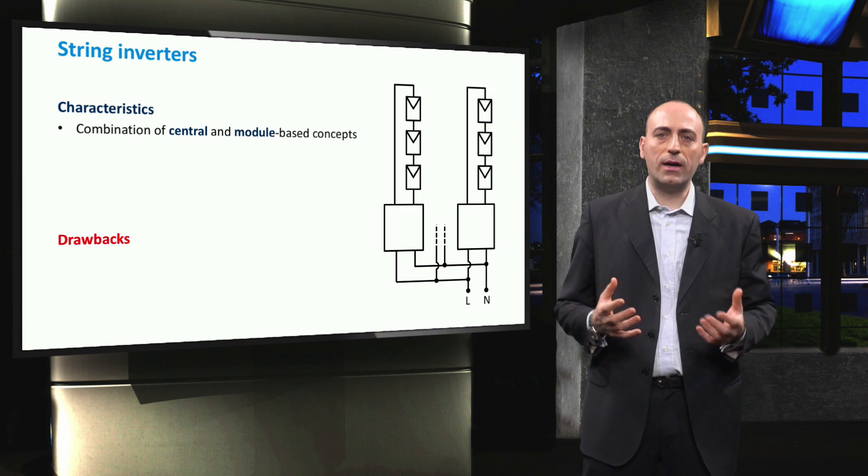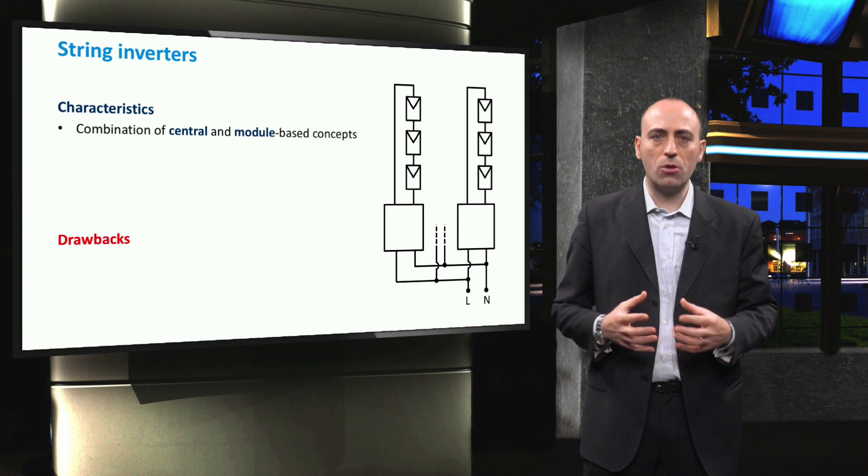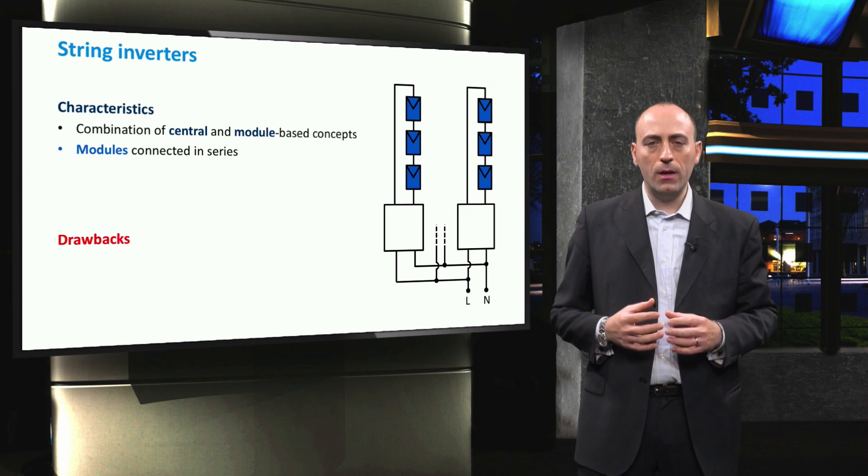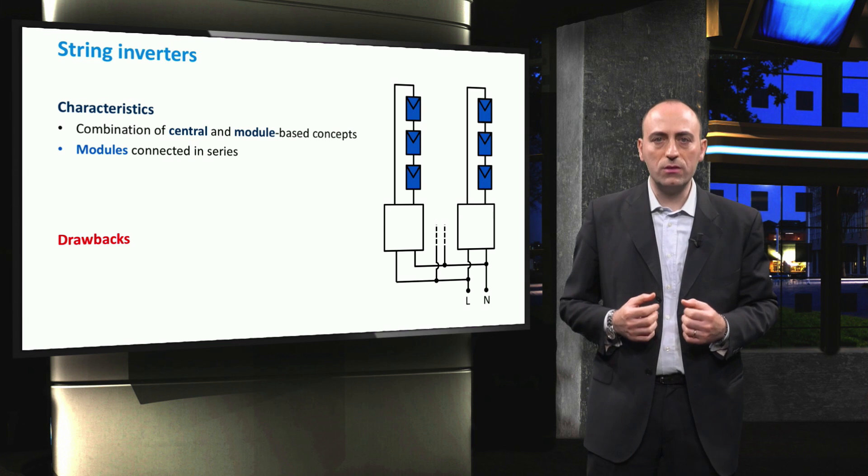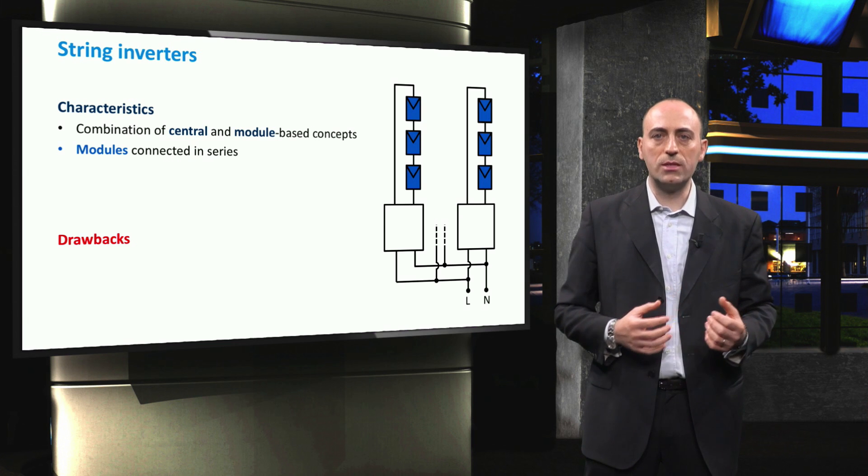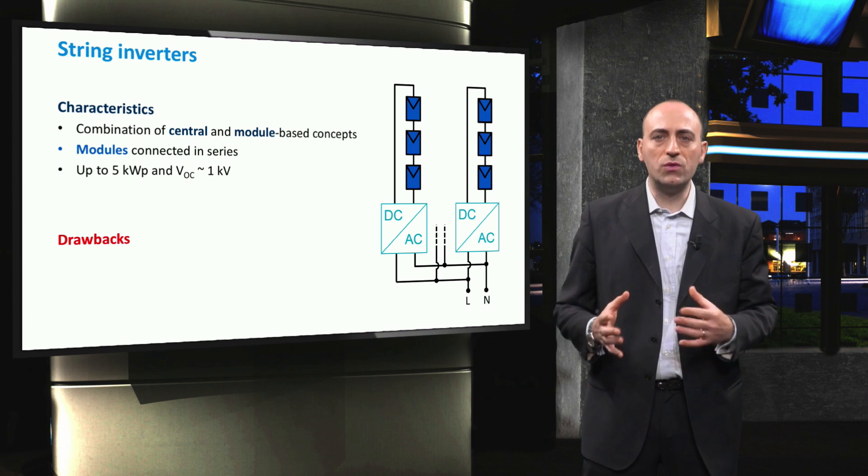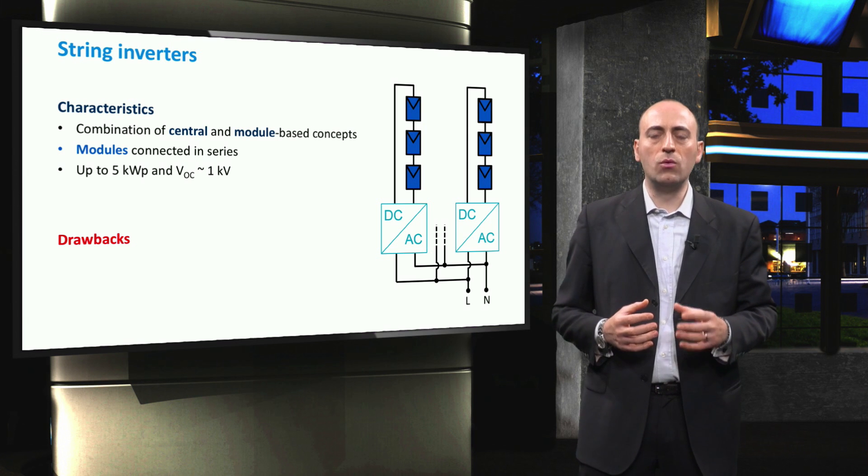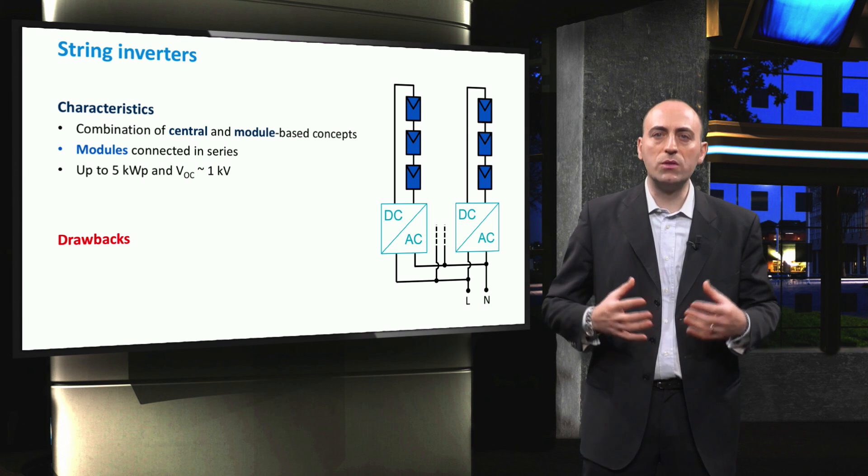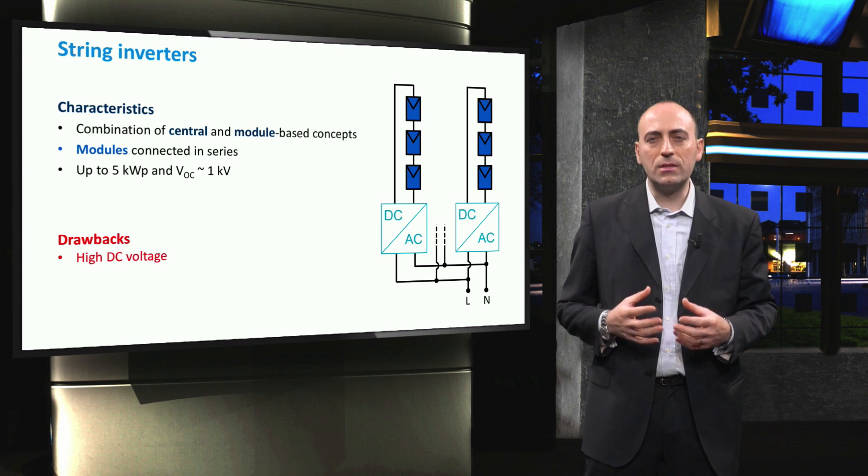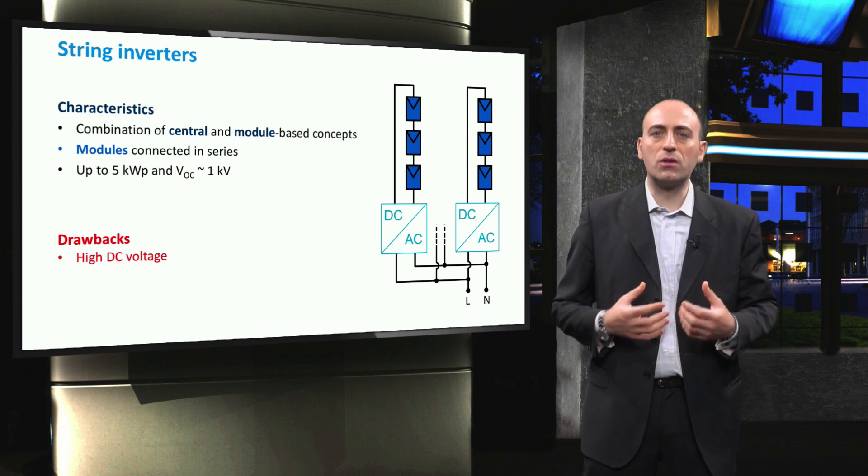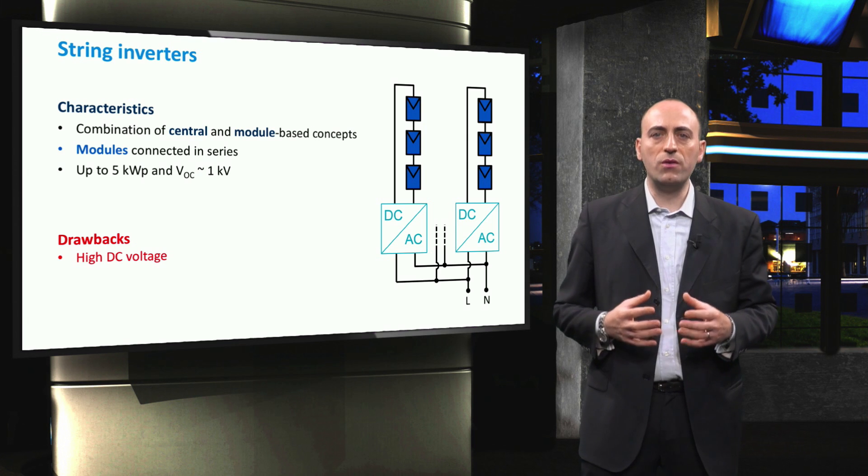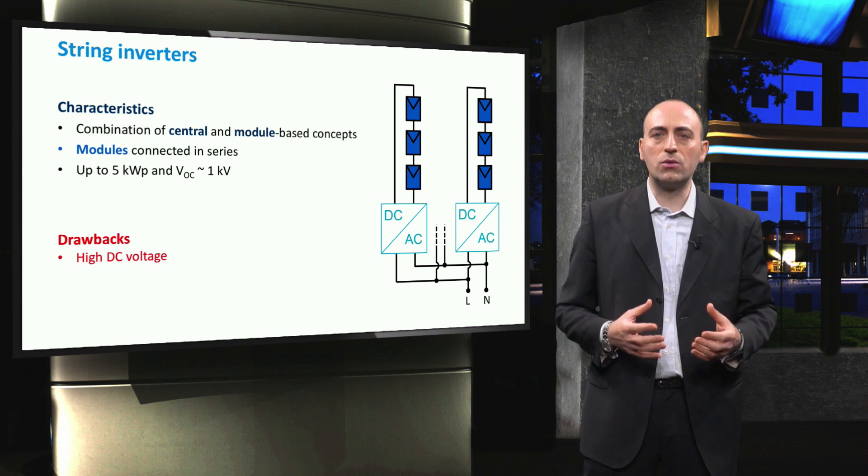The fourth architecture features string inverters, which combine the advantages of central and module integrated concepts with little trade-offs. So here modules are connected in series to form a string, like the central inverter concept, with a power rating of up to 5 to 6 kW peak in one phase configurations, and the open circuit voltage are up to 1 kV, which already exposes one advantage of this topology, since high DC voltages require special consideration, as in case of the central inverter architecture. Here this issue is even more important because string inverters are usually being installed in households or in office buildings without designated support structures or increased safety requirements.